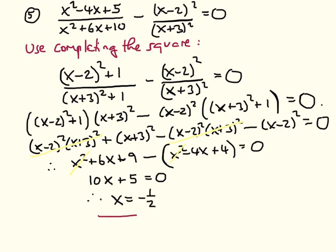This exercise was a little different because to solve it we used completing the square. What we're really trying to do is group the terms together so that cancellations are simple and we avoid lots of terms in powers of x to the fourth, x cubed, etc., which would all cancel but make mistakes much more likely. That's the end of this video and I hope that you have enjoyed practising your algebra.